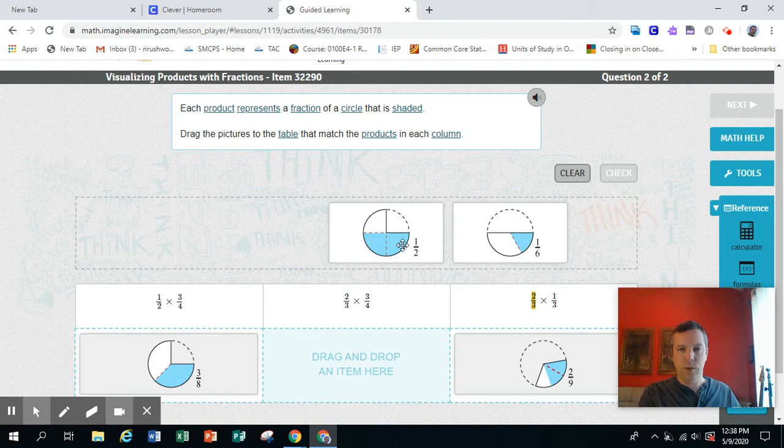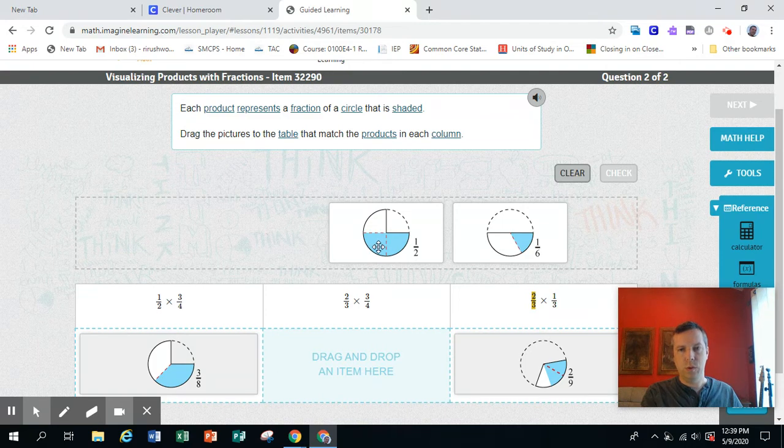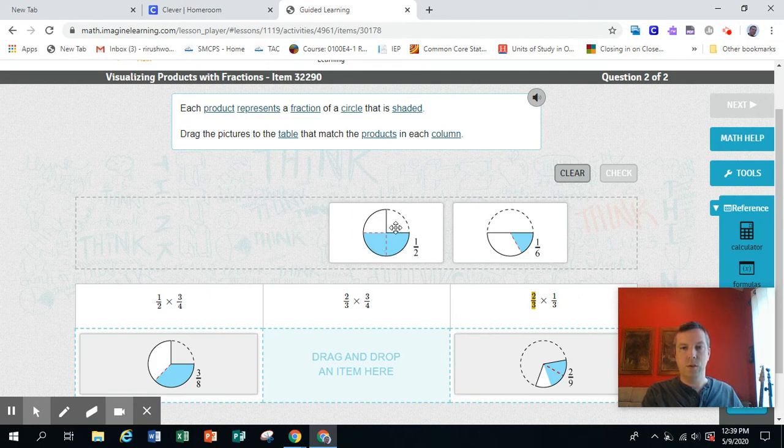1, 2, 3. We're ignoring the dotted line section. And then this 3 fourths is split into 3 even pieces. 1, 2, 3 even pieces. 2 of those 3 pieces are blue here. So this is 2 thirds of 3 fourths.